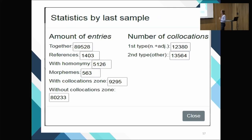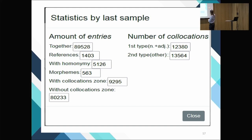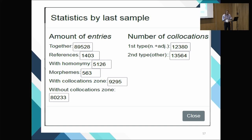Here is a bit more about the statistics: it's ninety thousand entries, fifteen hundred references, five thousand homonyms, and twelve thousand collocates of different types — first type and second type collocates.